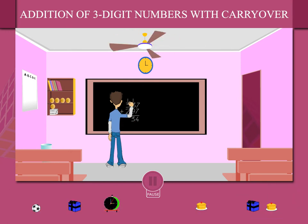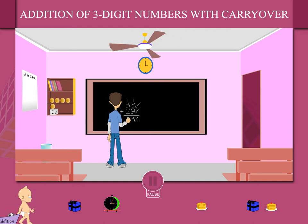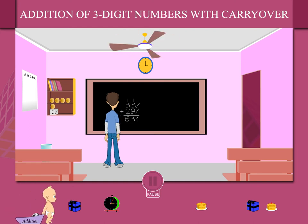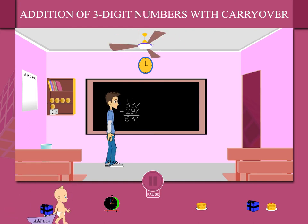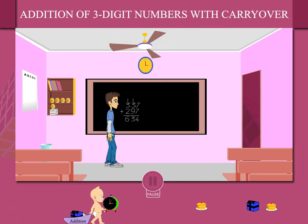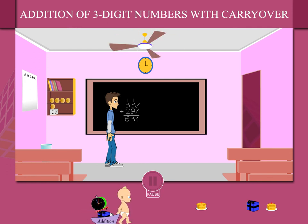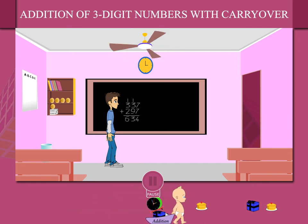He now adds the hundreds to get the answer. Remember, carryovers are added to the tens and hundreds columns to get the final answer.